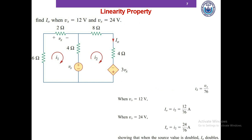This might sound unusual because in DC circuit analysis, voltage sources, resistors, and current sources usually have constant values. But if they do vary, linearity property gives us a way out and saves us the pain of analyzing the circuit again and again for each value of the variable element.